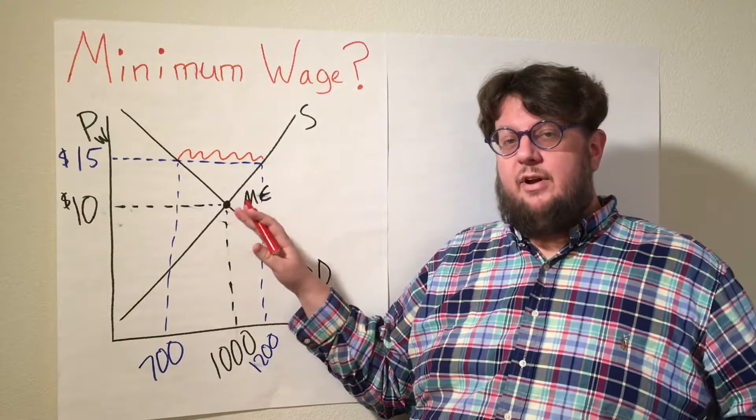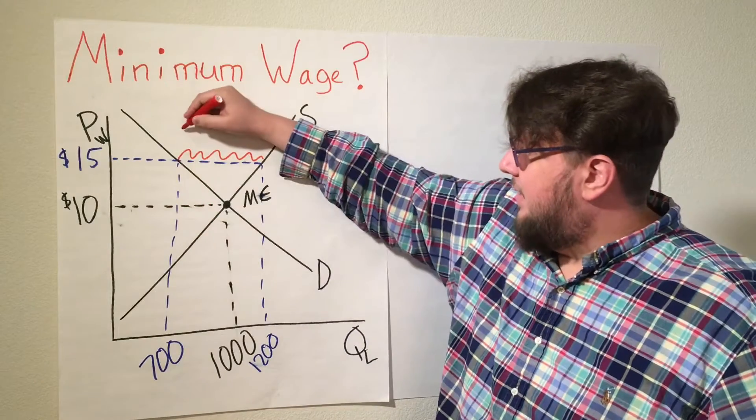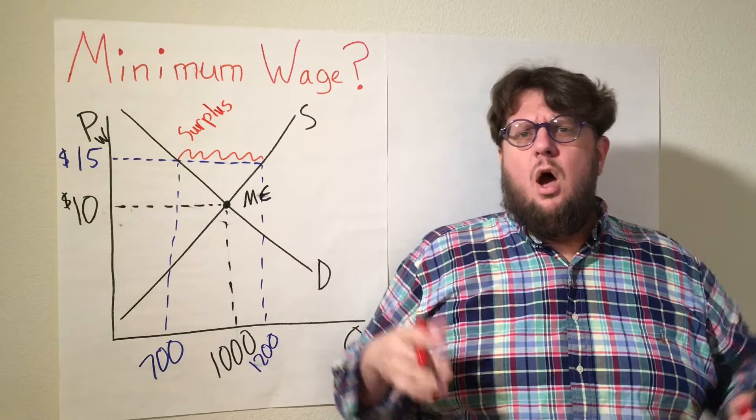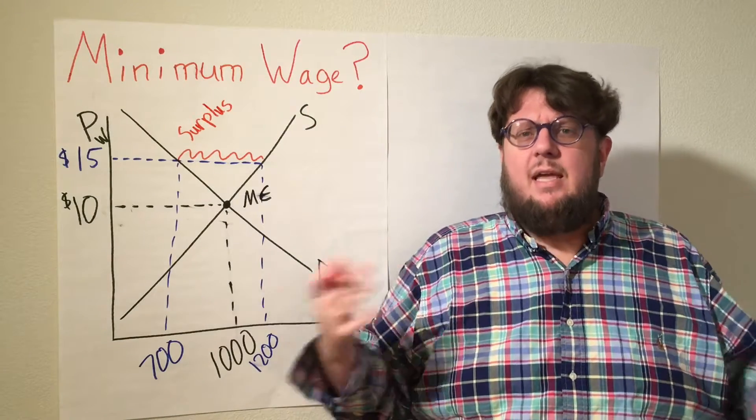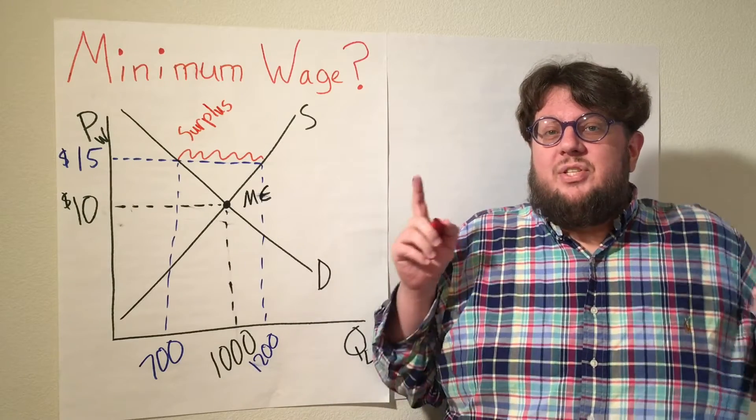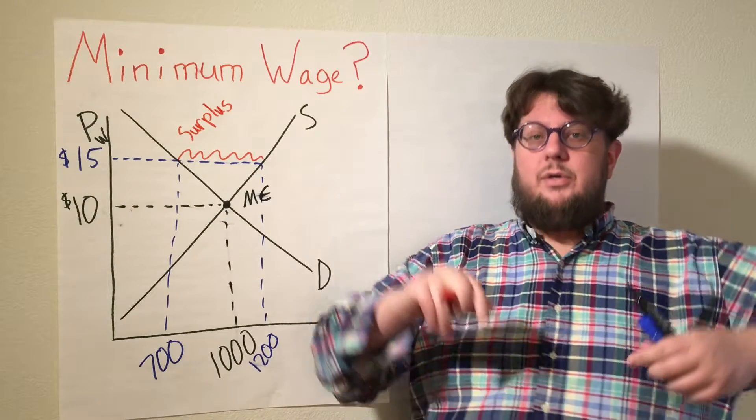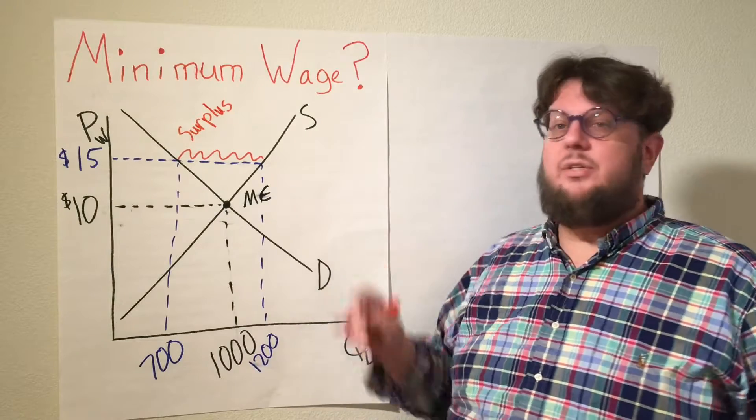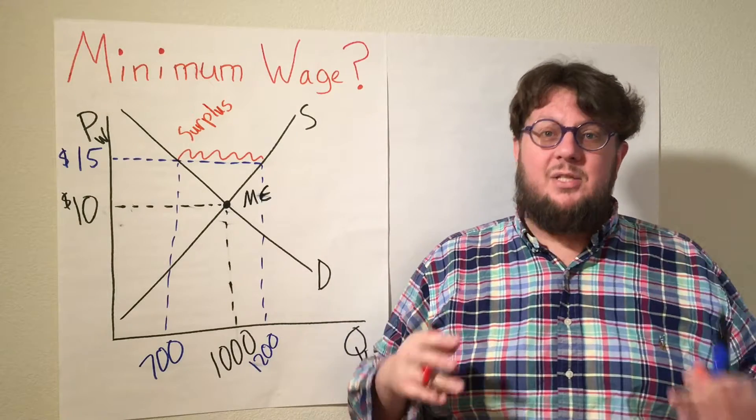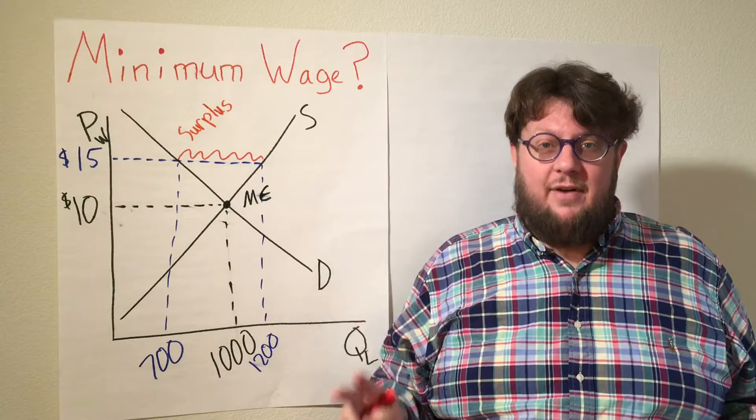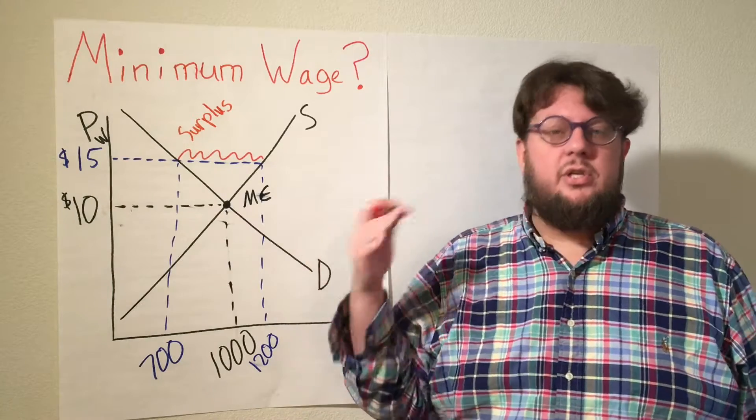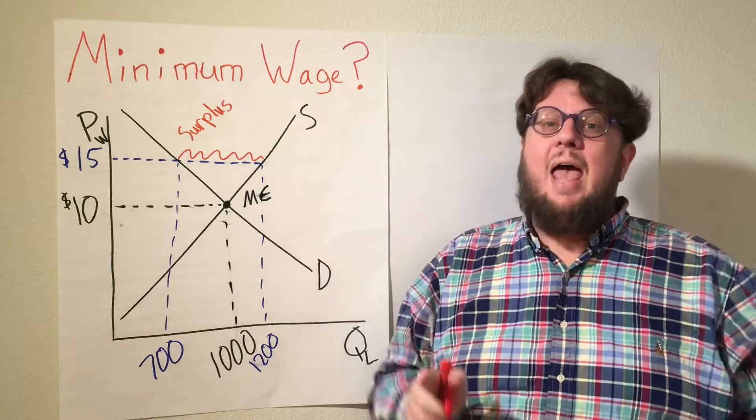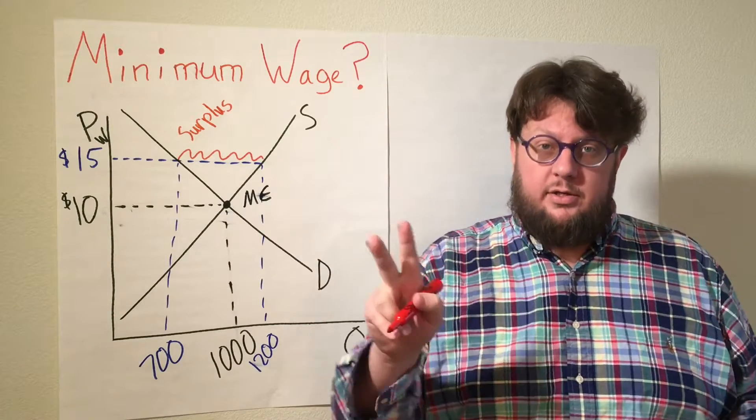So I have my angry red pen here. And right here, we're going to write surplus. And again, surpluses often to our ears sound good. Oh, there's a surplus of this. That means I can get more of it. But remember, the suppliers are the workers and the business owners are the demanders. And so if we have a surplus of workers, that means we have workers that are willing to work but cannot find a job. This surplus, we should, in our minds, because it's minimum wage, we should think of this surplus as either unemployment or underemployment.